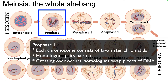What else happens during prophase one? The homologous pairs pair up. The maternal and paternal chromosomes find one another and they embrace. They do this thing called synapsis and crossing over, where they actually exchange pieces of DNA. So that's happening during prophase.